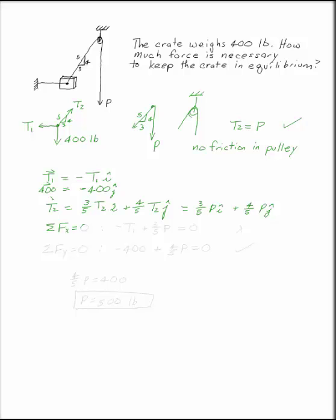Take your equilibrium equations. The sum of the forces in X equals zero, and the sum of the forces in Y equals zero. If we add up all the I's, we have -T1 + 3/5 P = 0, and if we add up all the J's, we have -400 + 4/5 P = 0.